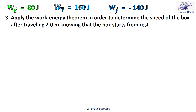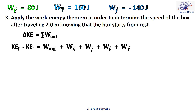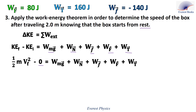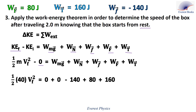In order to determine the speed of the box after traveling two meters, knowing that the box starts from rest, we apply the work-energy theorem: delta KE equals the sum of the works done by the external forces. Delta KE equals KE final minus KE initial. Since the box started from rest, KE initial equals zero, and KE final equals one-half m times v final squared. Replacing the work done by the external forces and solving, the final speed of the box equals 2.2 meters per second.